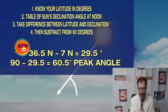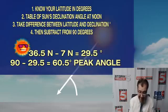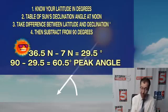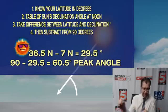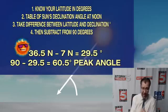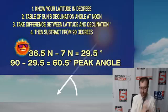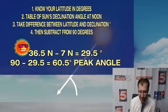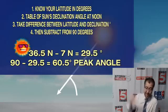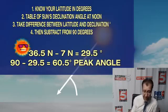In our case, from 36 and a half degrees north, you subtract 7 degrees north — the distance from where the sun actually has its peak 90-degree angle. That gives you 29 and a half. Then subtract that from 90, where the sun is actually at its maximum point, and that will give you the final total.